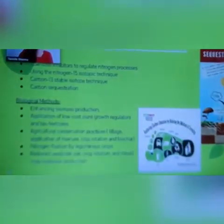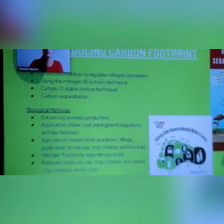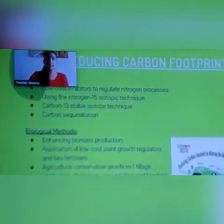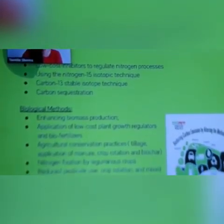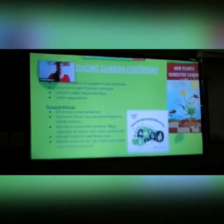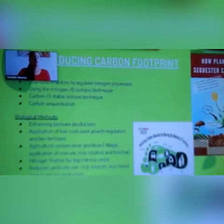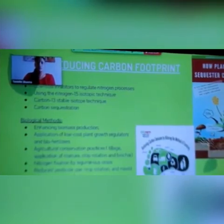If we look at the ways to reduce carbon footprint, there are two ways possible: chemical methods and biological methods. The chemical methods include low-cost inhibitors that regulate nitrogen processes, using the nitrogen-15 isotopic technique through which scientists can identify sources of nitrous oxide production, carbon-13 stable isotopic technique that allows researchers to identify sources of carbon sequestered in the soil, and carbon sequestration — the capture and storage of atmospheric carbon dioxide in soil. The biological methods include enhancing biomass production, nitrogen fixation by leguminous crops, reduced pesticide use, crop rotation, and many more.